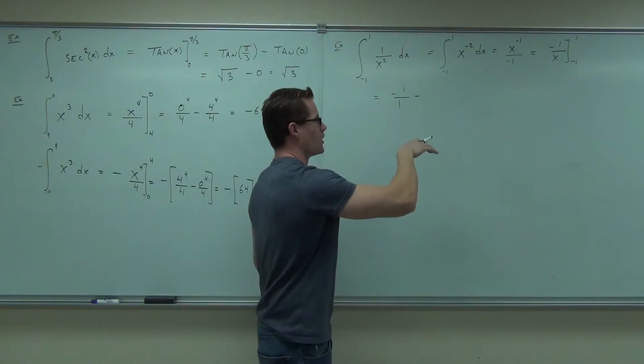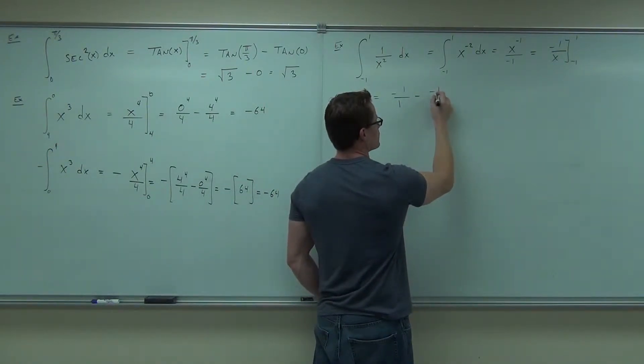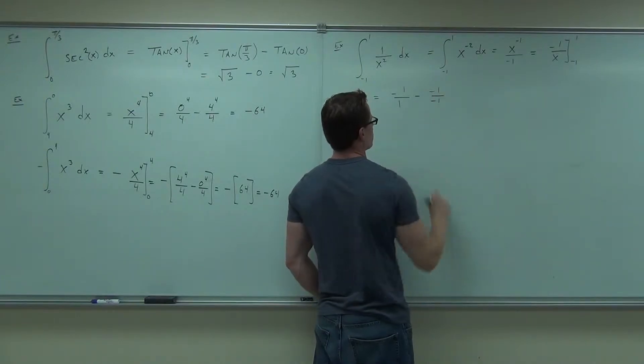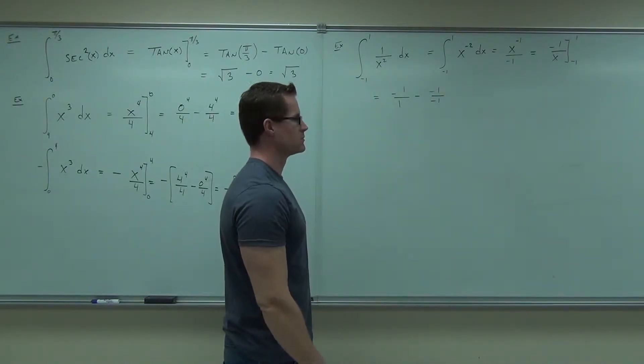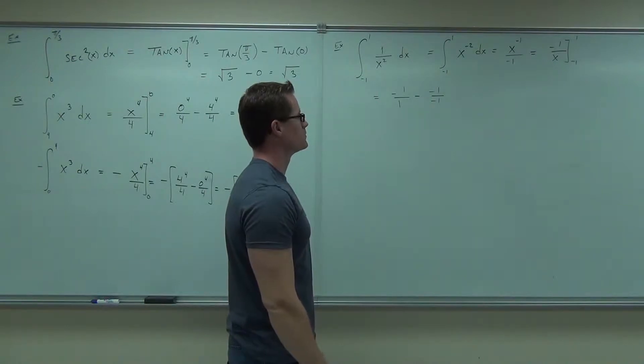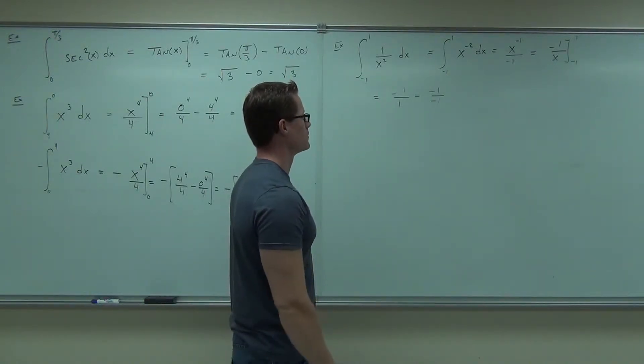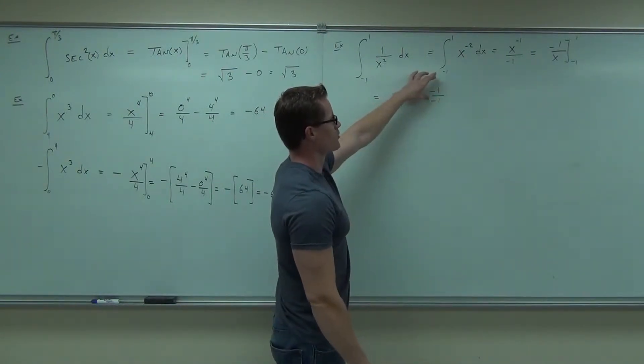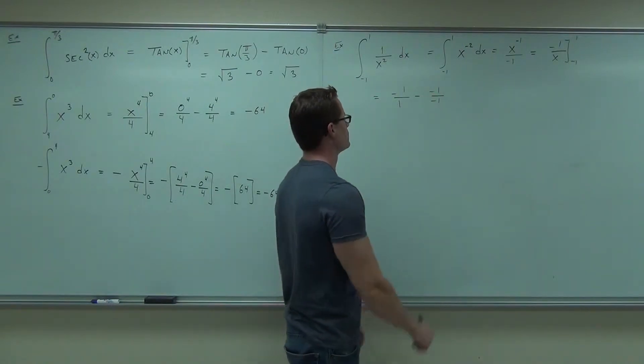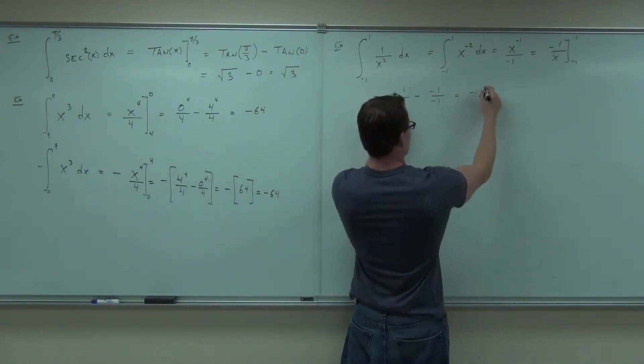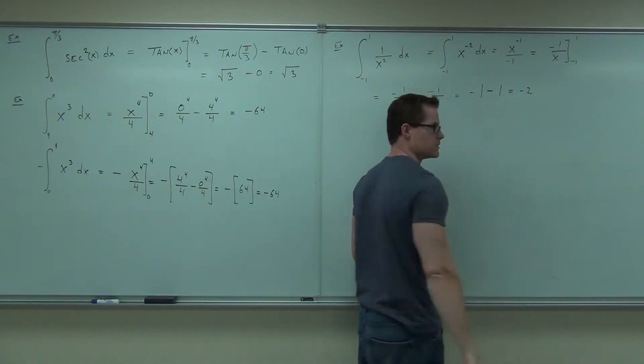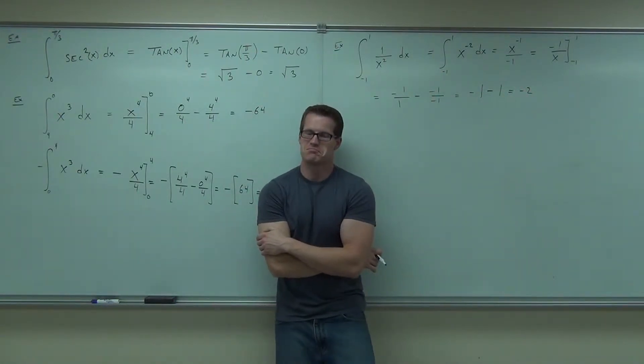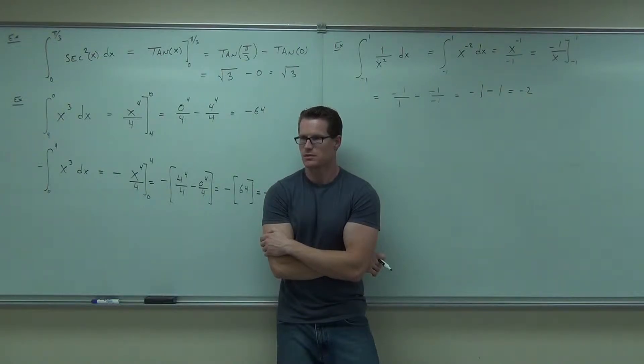Do you have negative 1 over 1 minus negative 1 over negative 1? Hopefully if I did that right, make sure my signs are correct. I'm looking at that as negative 1 over 1 minus negative 1 over negative 1. That's negative 1 minus 1. Negative 2? Yeah. You get an answer. You do. But now, think about the answer. Can I have a negative area?